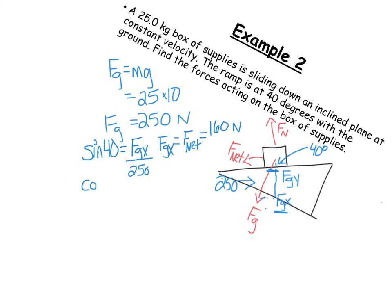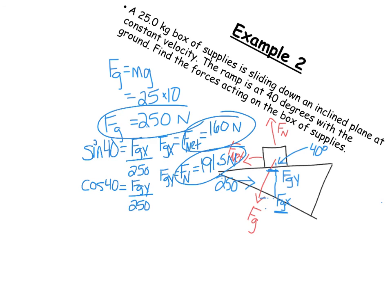And then if I come to cosine 40 equals F G Y over 250, then I get my F G Y, which is my normal, I get my normal to be 191.5 Newtons. So there's my normal, there's my net, there's my gravity.